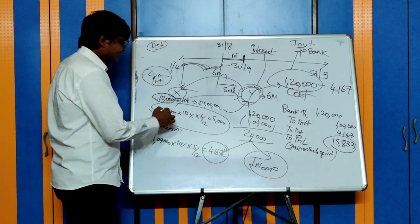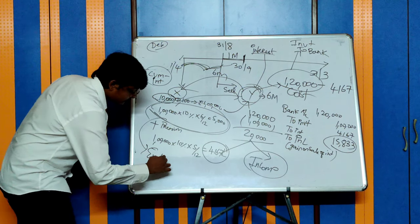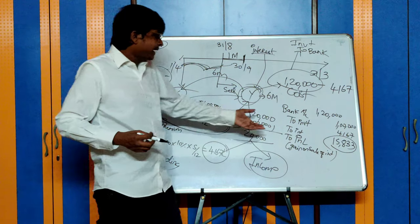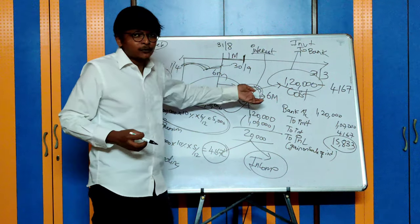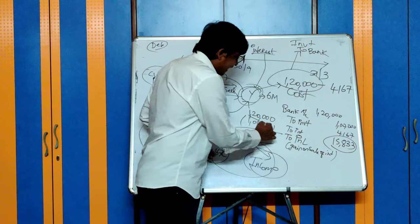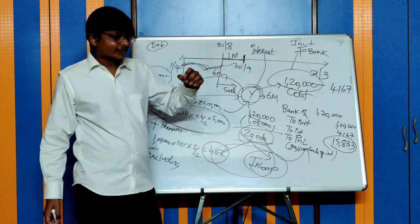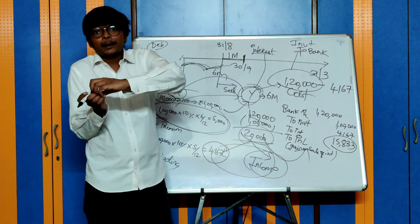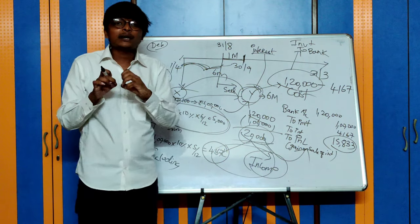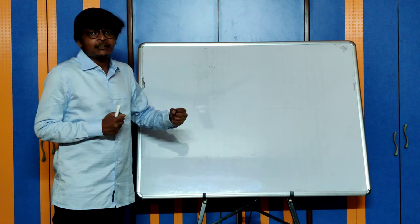Ex-interest means the sale or purchase is excluding interest. So if the sale of Rs. 1,20,000 is given as ex-interest, then no need to split — the entire Rs. 20,000 will be the gain on sale of investment. Interest has to be computed additionally. This is the concept of cum-interest and ex-interest.